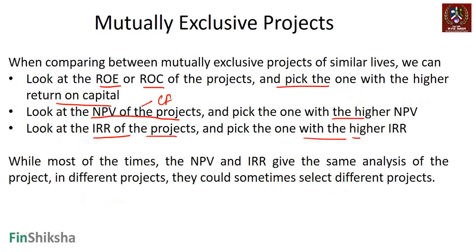IRR is basically the maximum rate at which you can raise capital so that the project is still profitable. If the hurdle rate or cost of capital is greater than the IRR, you reject the project. The higher the IRR, the more your chances of taking the project, because you could borrow money even at a higher rate. Most of the time, NPV and IRR give the same ranking and analysis across different projects.